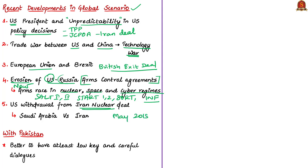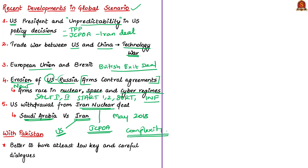The US announced withdrawal from the Iran nuclear deal in May 2018, also called the Joint Comprehensive Plan of Action. There are also increasing tensions between Saudi Arabia and Iran, and between Iran and the United States in recent times. The author says that all these recent developments add complexity in handling China and the rise of China through Indian foreign policy, as the global environment has become highly unpredictable.